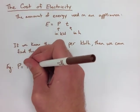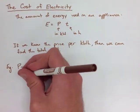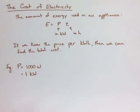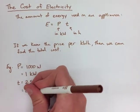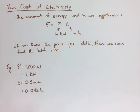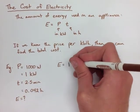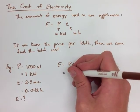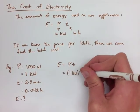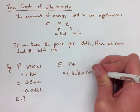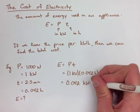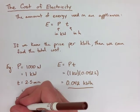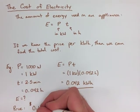If we look at our first example, we have a power of 1,000 watts, which we have to change to 1 kilowatt. We have a time of 2.5 minutes, which we have to change to 0.042 hours. We need to find our energy. After we find our energy, we can use our price to find our cost. So, we use our energy formula. We sub in 1 kilowatt and 0.042 hours. We get 0.042 kilowatt hours. We know that our price is 0.12 dollars per kilowatt hour.